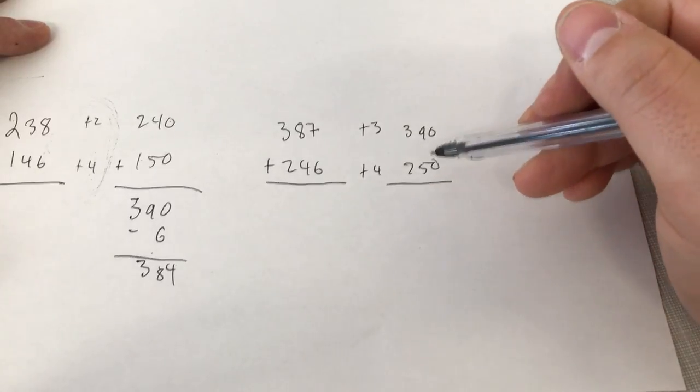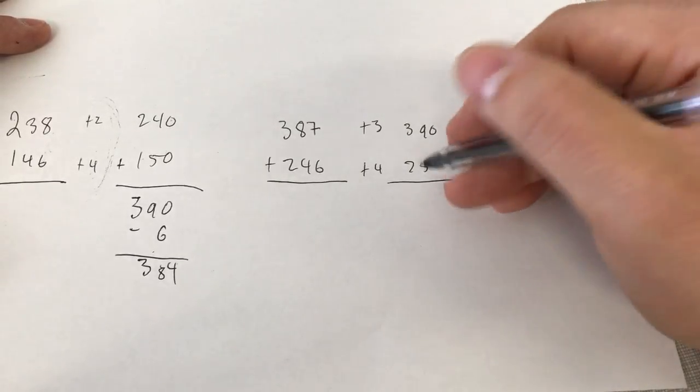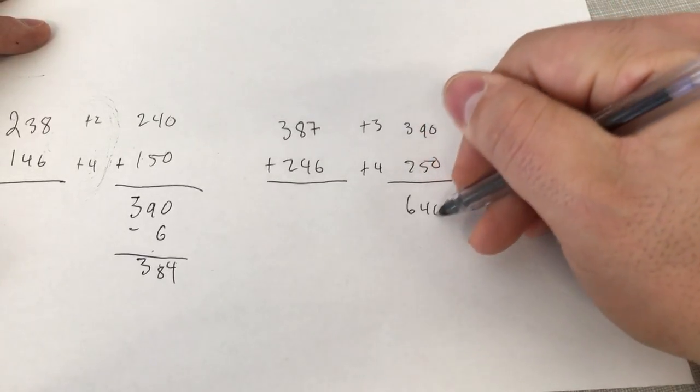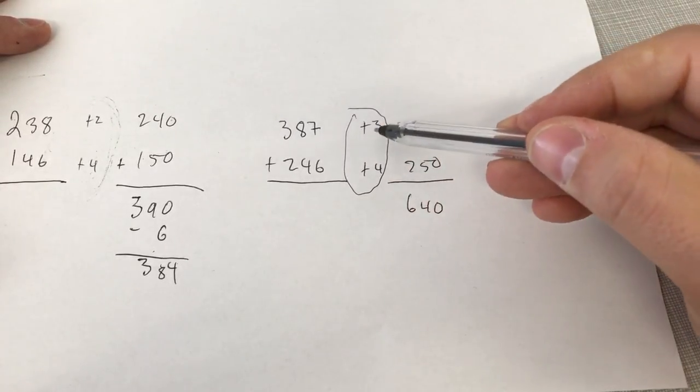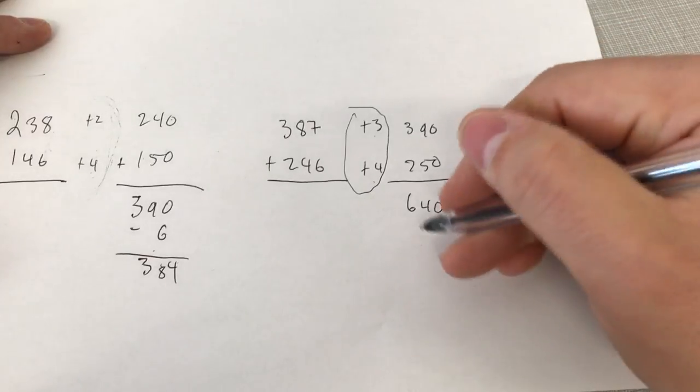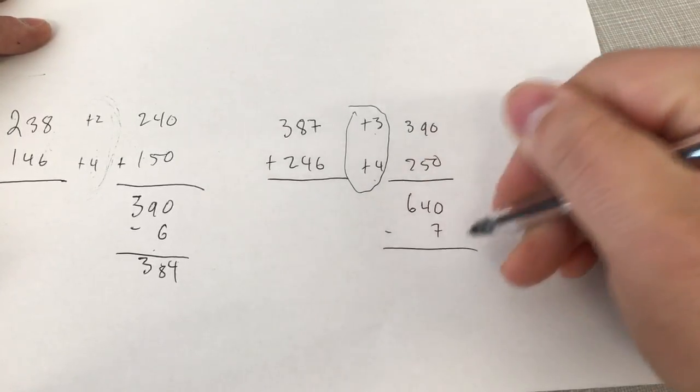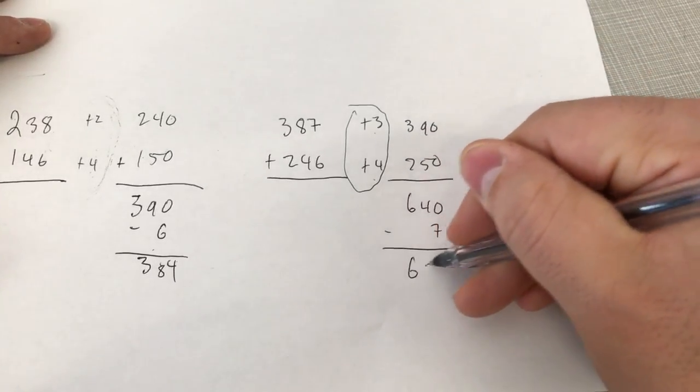If we add these together, 390 plus 250 gives us 640. And then we're going to subtract what we increased by, which is 3 and 4, which is 7, from the 640. So minus 7 brings our total to 633.